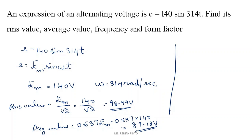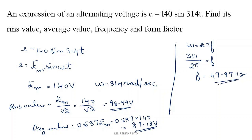To find frequency, we use ω = 2πf. Since ω = 314 rad/s, frequency f = 314 / (2π) = 49.97 Hz. For form factor Kf = RMS / average = 98.99 / 89.18 = 1.11. This is how you solve this type of problem.